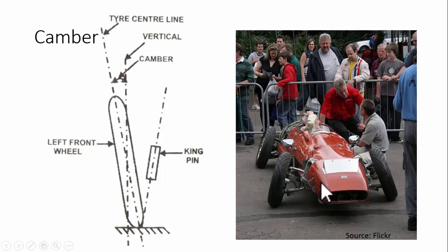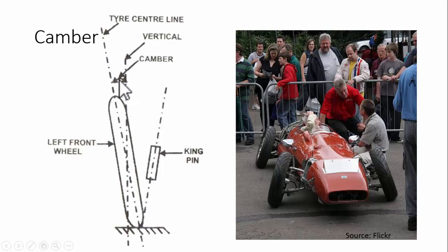Negative camber is generally given in sports cars. This is the angle made between the tire center line and the absolute vertical — that is called the camber angle. A negative camber angle improves the grip of the vehicle when cornering because of increasing the contact area of the tire with the road.